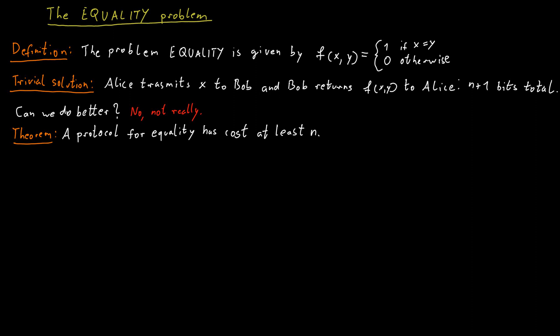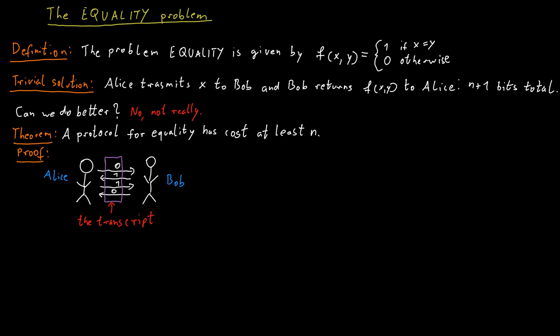So imagine you're tapping into the line between Alice and Bob, and you're writing down everything you hear — something like Alice transmits a 0 to Bob, Bob responds by transmitting a 1 back to Alice, and so on. That is the transcript. And what we observe is that the decision Alice makes and also the final conclusion Alice reaches about the value of the function f of x and y is entirely based on the input she receives, x, and the transcript. This is the only information she has.